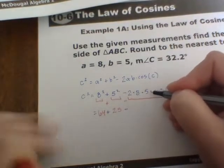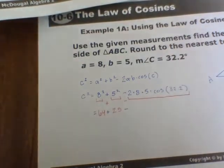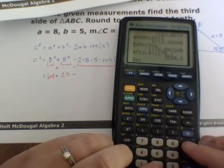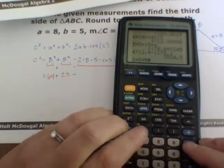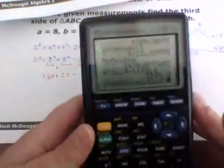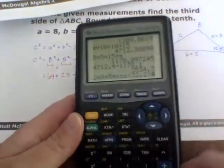we're going to take 2 times 8 times 5 times cosine of 32.2. So all along in your calculator, you can just do 2 times 8 times 5 times cosine of 32.2. So you don't necessarily need to do it in any order,